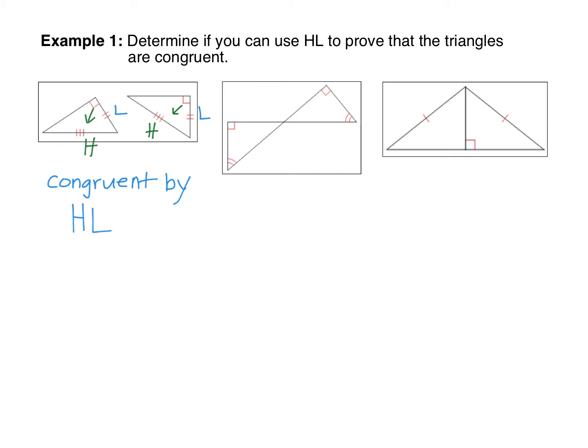Let's check this middle set of triangles. The two intersecting lines form a pair of vertical angles, so I'll add that marking — this angle and this angle are congruent because they're vertical angles. I do have right triangles, but I do not have a hypotenuse or a leg marked; all I have is three pairs of congruent angles. That's not enough information to use HL or any other theorem. So the answer here is no — you do not have a hypotenuse or a leg.